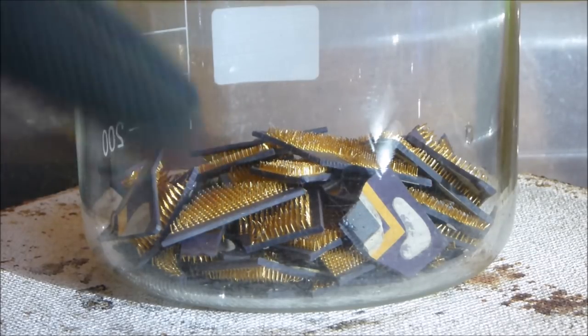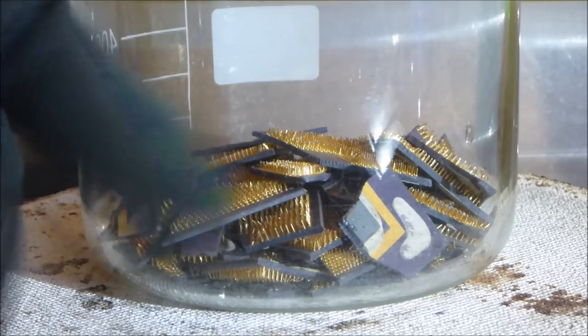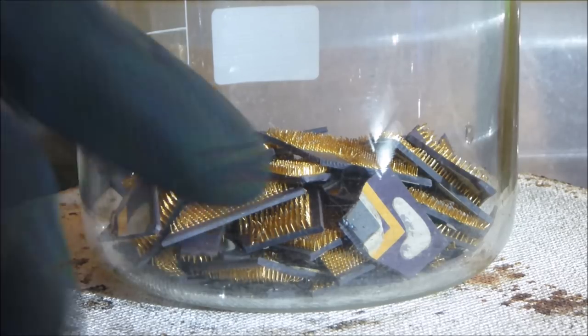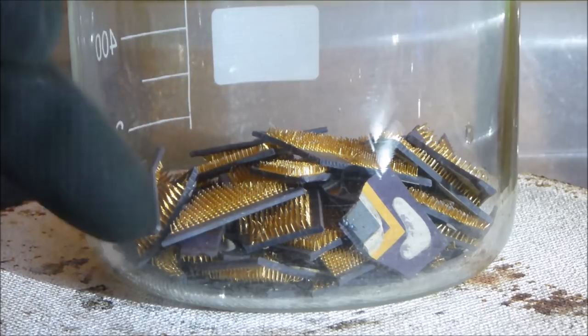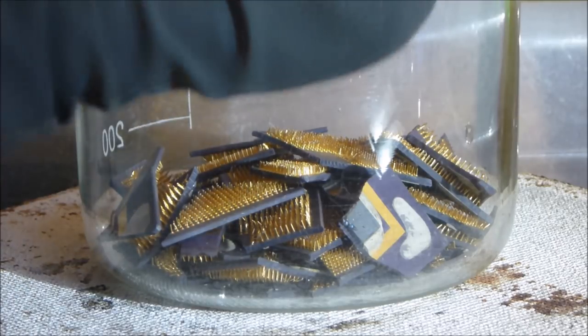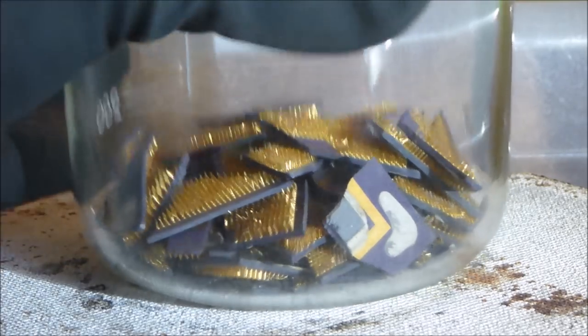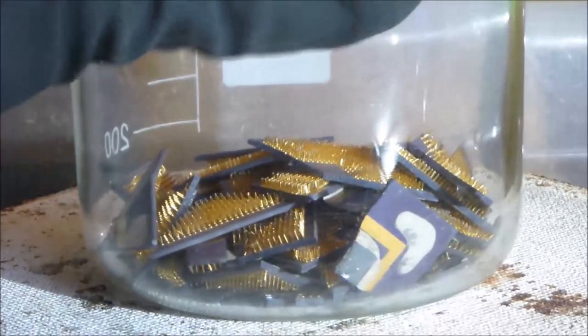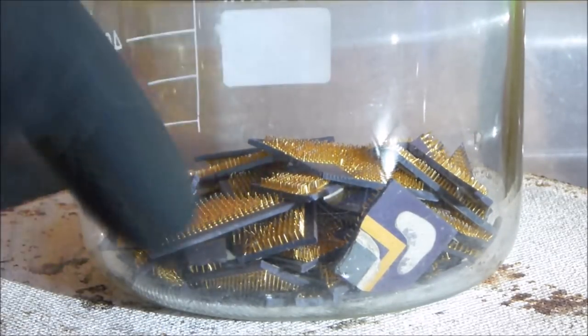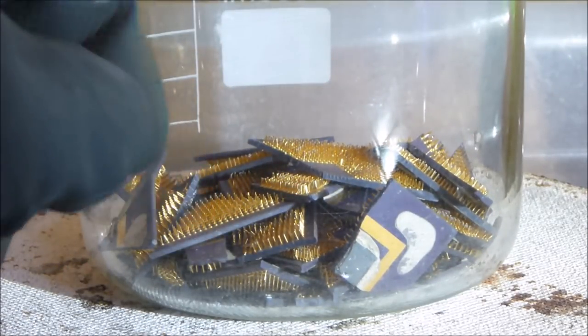Hey guys, so as you can see I've got those Sun SPARC processors here. I'm starting with the ones that have the pins because my gut feel is that they are going to have substantially more gold than those little plated ones. You can see that I've broken them up into smaller bits. There's no gold in the substrate of this so the only real reason I've done that is to basically use less acid.